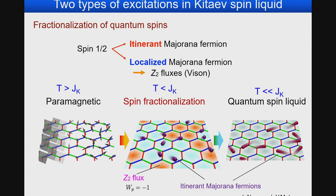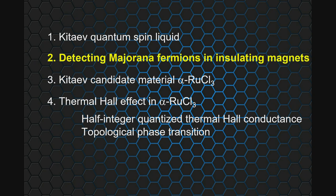There are two types of excitations in the quantum spin liquid due to the fractionalization of quantum spins: itinerant Majorana fermions and localized Majorana fermions as Z2 fluxes or visons. At very high temperature, larger than the Kitaev interactions, the system is a quantum spin liquid with Dirac dispersions and only itinerant Majorana fermions moving in the bulk. In the intermediate temperature range, Z2 fluxes are excited and interact with the itinerant Majorana fermions.